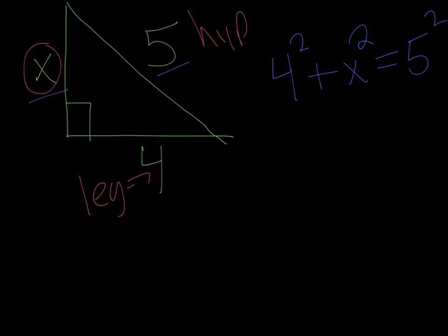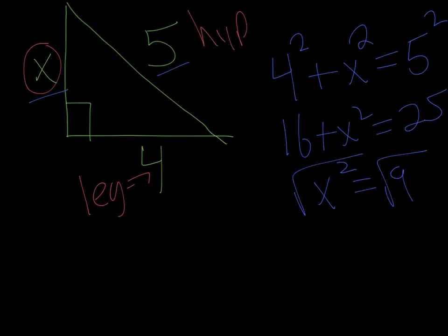If I simplify both sides a little bit, I get 16 plus X squared has to equal 25. At this point I can subtract 16 from both sides, so X squared has to equal 9. Square root both sides, meaning that X has to equal 3.